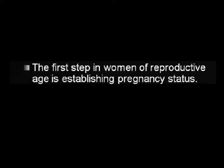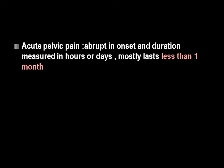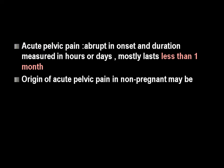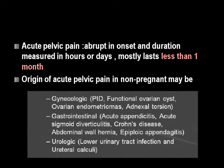For a young patient with acute pelvic pain, the first thing to do is a beta-hCG level to determine pregnancy status. Acute pelvic pain means abrupt onset with duration measured in hours or days, mostly lasting less than one month. The origin may be gynecologic — like pelvic inflammatory disease, functional ovarian cysts, endometriomas, adnexal torsion — gastrointestinal, including appendicitis, sigmoid diverticulitis, Crohn's, hernia, and epiploic appendagitis, or urologic, including lower urinary tract infection and ureteric calculi.